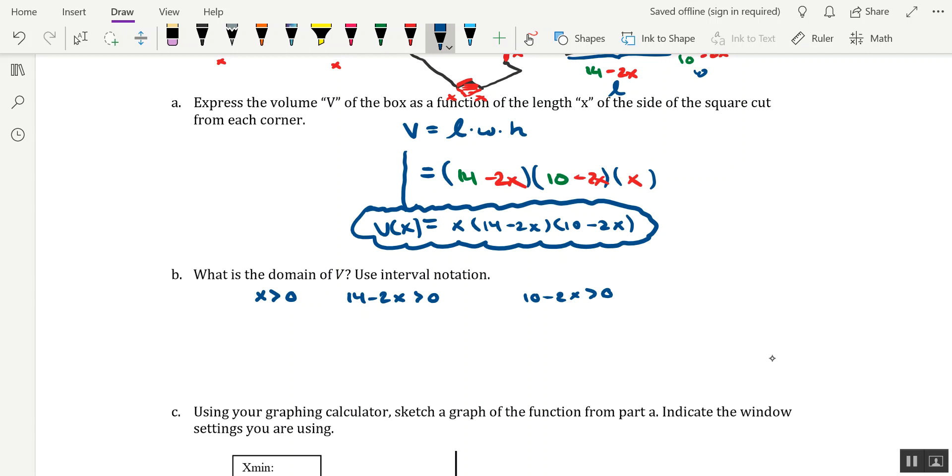To solve this one, we'll subtract 14 from each side to get negative 2x is greater than negative 14, and then divide each side by negative 2. Keep in mind that when you divide an inequality by a negative, that reverses the inequality symbol, so this is saying that x is less than 7 now.